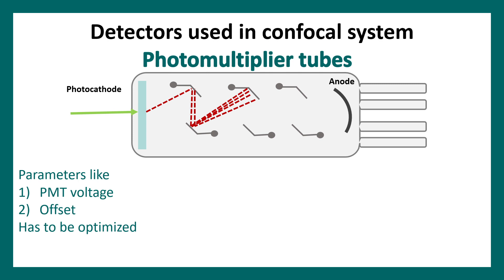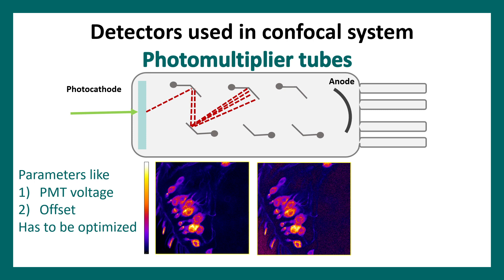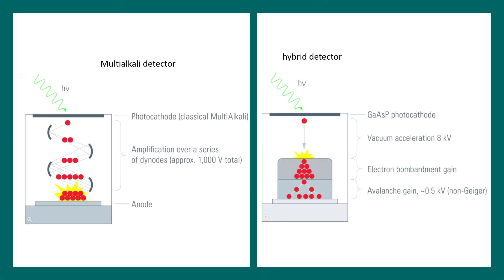Several parameters are used in confocal microscopy, such as PMT voltage and offset, which must be properly adjusted for an ideal image. For example, if the offset is not set correctly, the background pixel values rise far above zero, resulting in high background noise — as seen in a comparison image. These settings are critical for good imaging. Modern confocal microscopes also use hybrid detectors and multi-alkali detectors, which are more sensitive and can detect minute signal amounts.